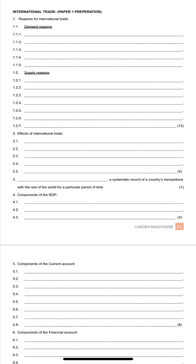Now with international trade, the first thing you need to know are the reasons why countries trade with one another. We break these reasons into two groups: we have demand reasons, and we have supply reasons.